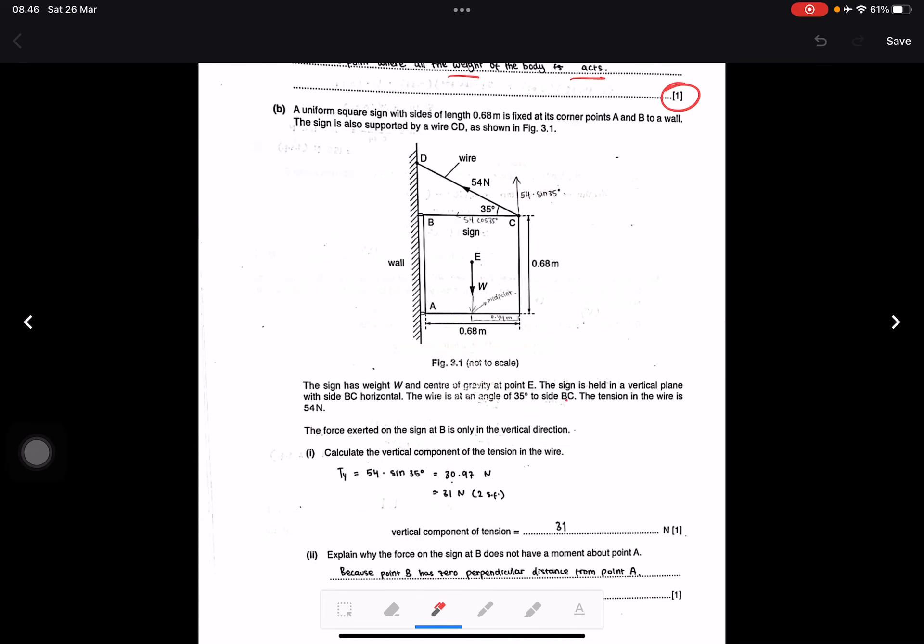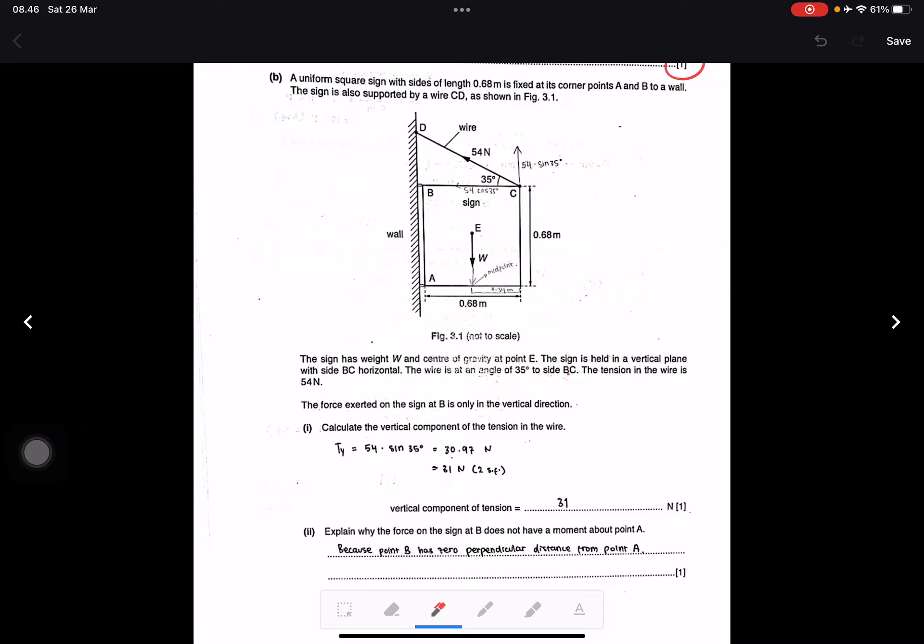Question B: A uniform square sign with side of length 0.68 meters is fixed at its corner points A and B to a wall. The sign is also supported by wire CD, as in figure 3.1. The sign has weight W and center of gravity at point E. The sign is held in a vertical plane with side BC horizontal. The wire is at angle 35 degrees to side BC. The tension in the wire is 54 newtons.